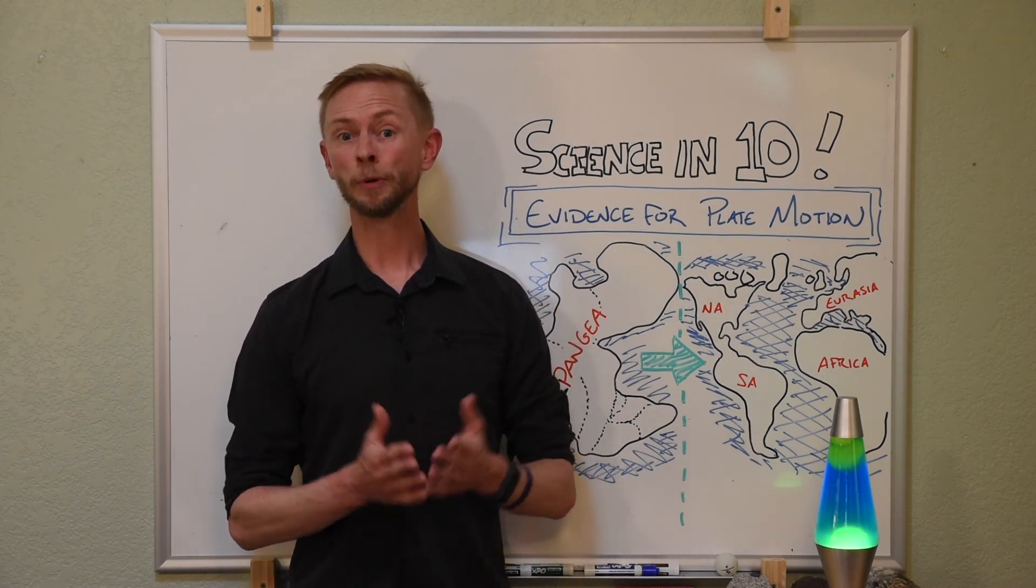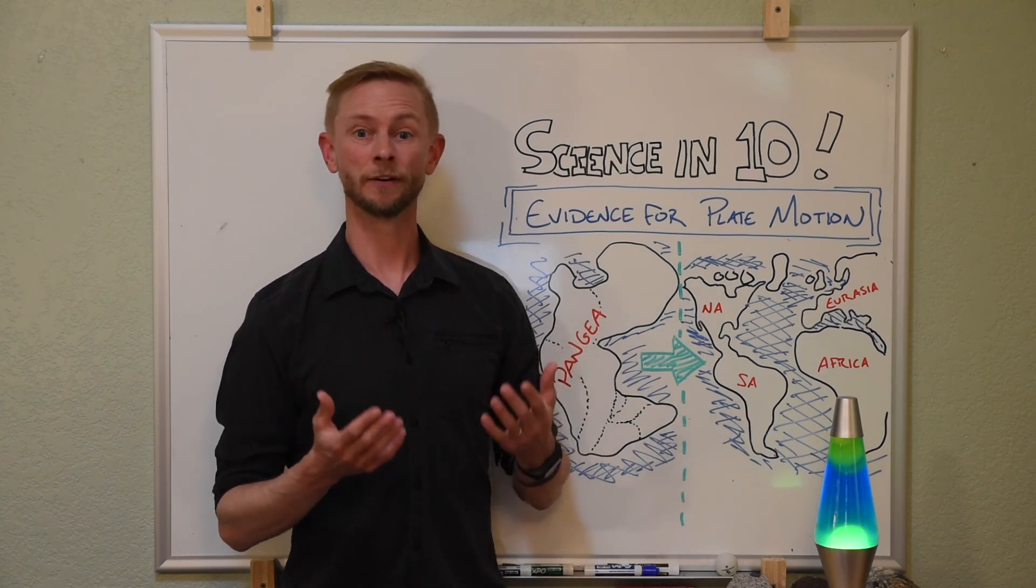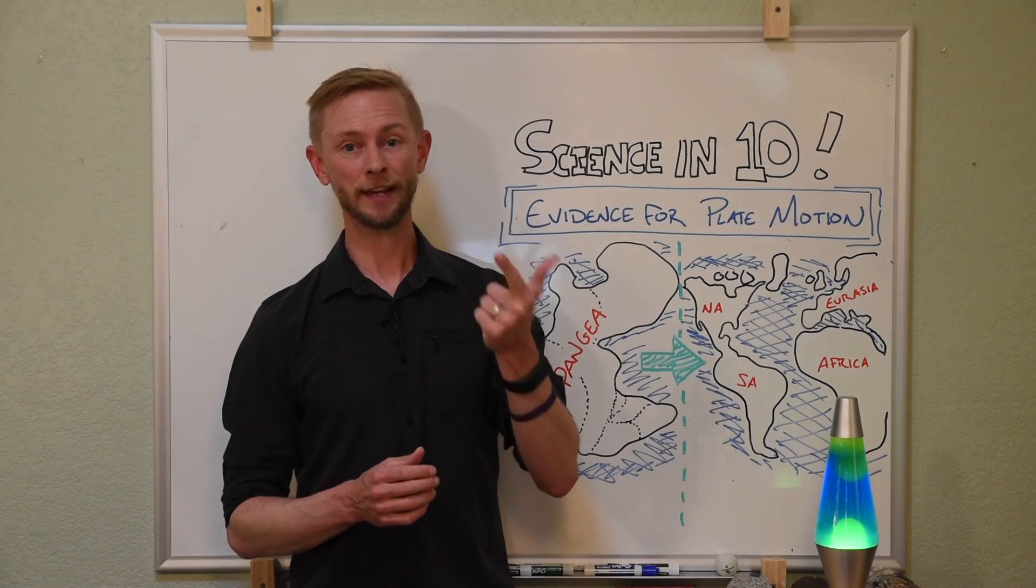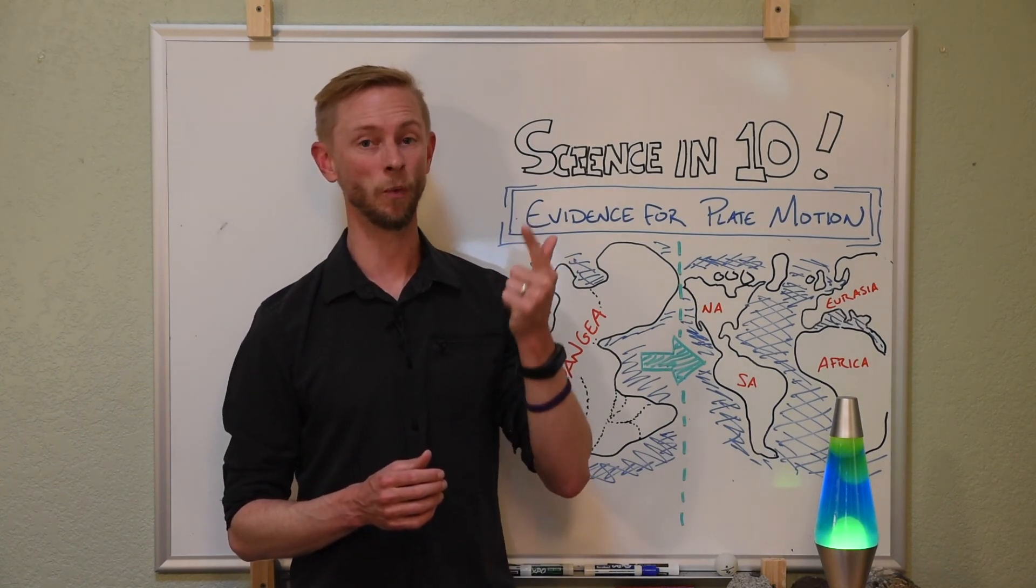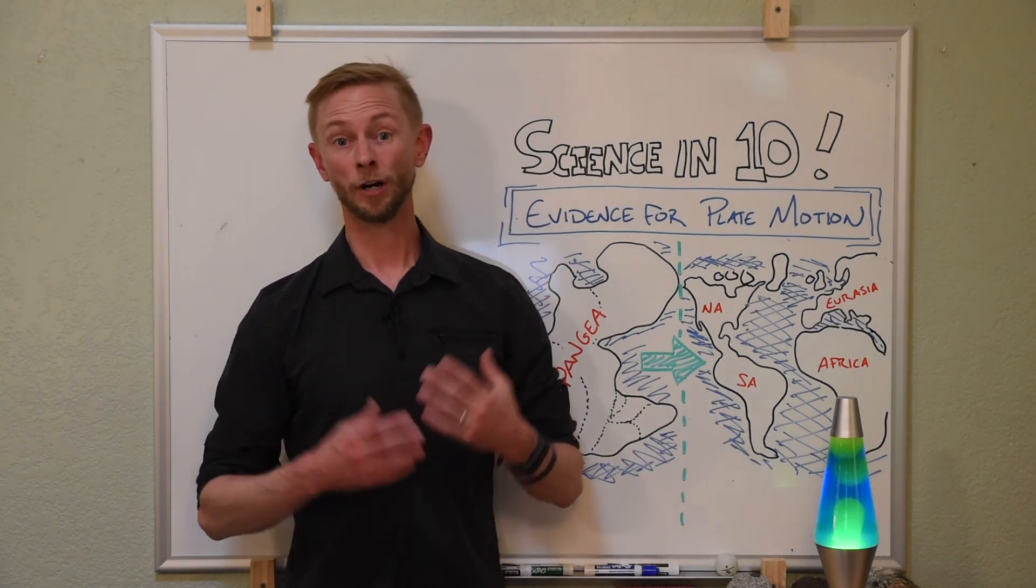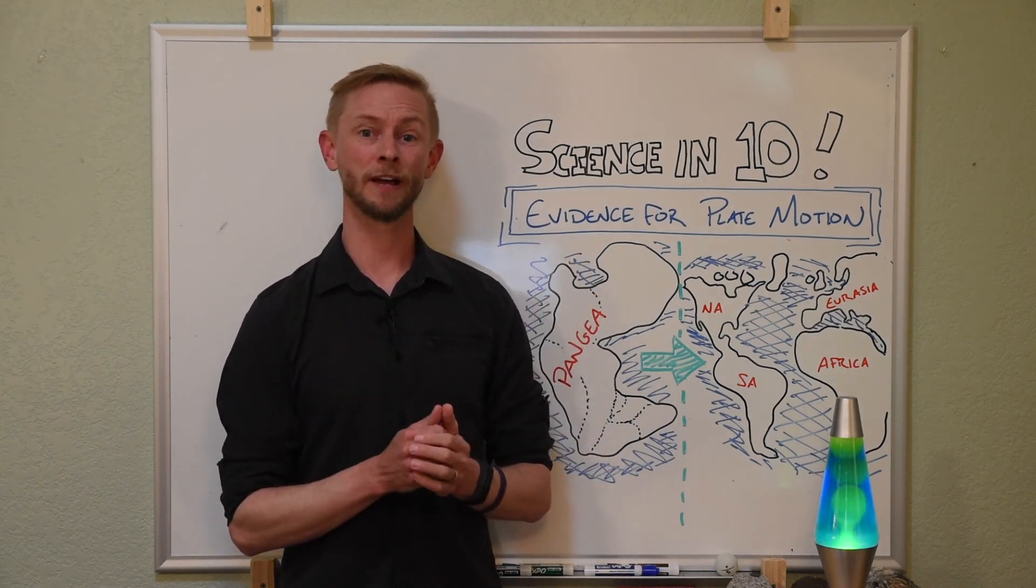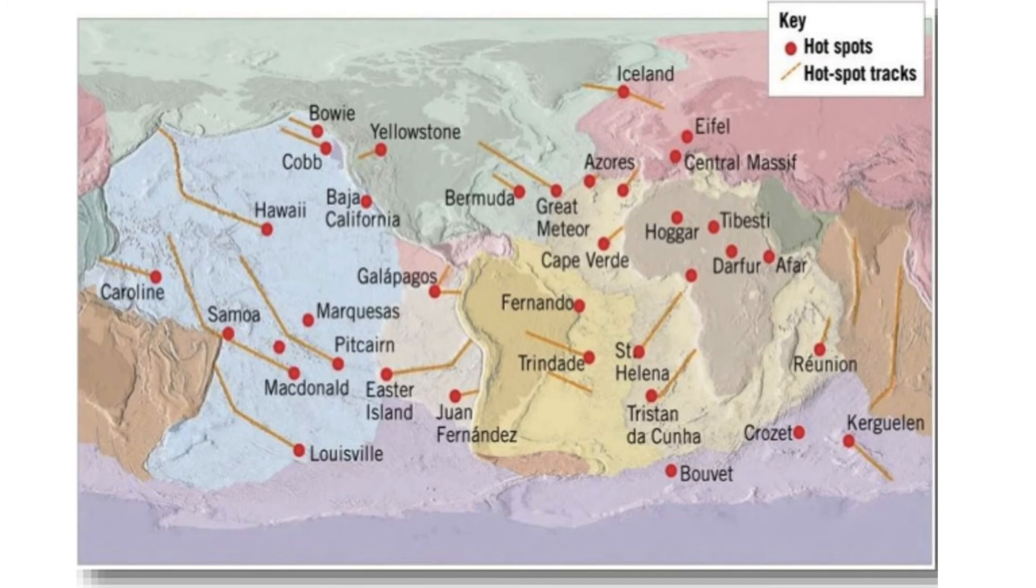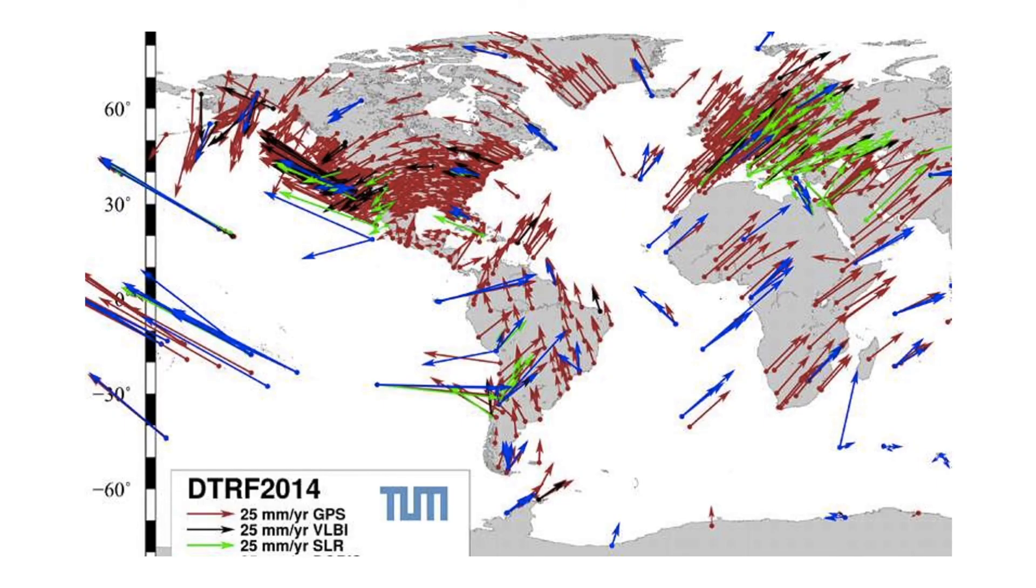So, there we have a couple solid sets of data that are evidence for plate motion. Wegener's observations, and the age of the ocean floor moving away from the mid-ocean ridges. Of course, there are many more pieces of evidence for plate motion. Paleomagnetism, hotspot tracks, and GPS measurements just to name a few.